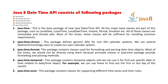The java.time.zone package contains classes for supporting different time zones and their rules. These are the five packages available in the Java 8 DateTime API. Most of the time we use the java.time package, but it's important to understand all of them. The DateTime API has been beautifully revamped in Java 8 — all classes are immutable and thread-safe, and all utility operations are much easier.